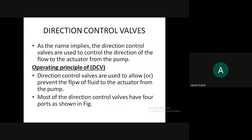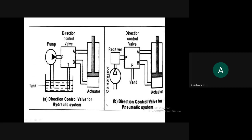Directional control valves are used to control the direction of flow to the actuators from the pump. They allow or prevent the flow of fluid from pump to actuator — either allowing flow, stopping it, or moving the fluid in the opposite direction. Most directional control valves have four ports, as shown in the examples for both hydraulic and pneumatic systems.